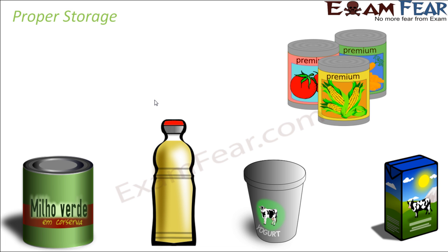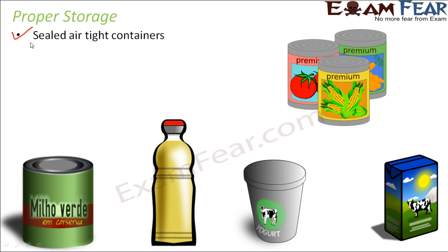Another preservation method is proper storage. Food items should not be left open; they must be stored in proper, sealed, airtight containers. Airtight containers prevent air from continuously entering, since too much air supports microbial growth through aerobic respiration. We do not want to promote microbe growth, so airtight sealing is essential.